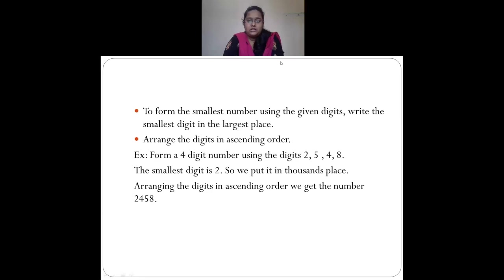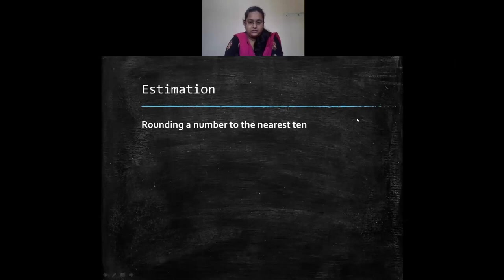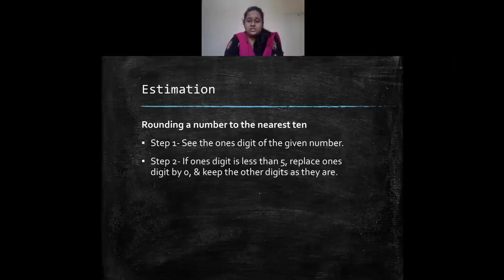Now we will move on to rounding of numbers. Rounding a number means getting a clear, estimated, or approximated value. To round a number to the nearest 10 — which you have already learned in 3rd standard — first check the ones digit of the given number. If the ones digit is less than 5, replace the ones digit by 0 and keep the other digits as they are.